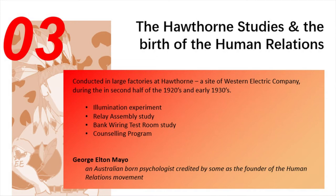The second test was conducted with a small group of female workers on relay assembly. Various changes were made to the women's working conditions during the study — the length of the working day, the working week, length and timing of rest breaks — and the result was improved productivity, although additional factors contributed, such as the interest shown by those conducting the test in the women themselves. Next was the bank wiring room study, which revealed that working in teams and collaboration could also drive productivity improvements. Lastly, a counselling program where all employees were interviewed to monitor the impact of seeking their input on productivity.